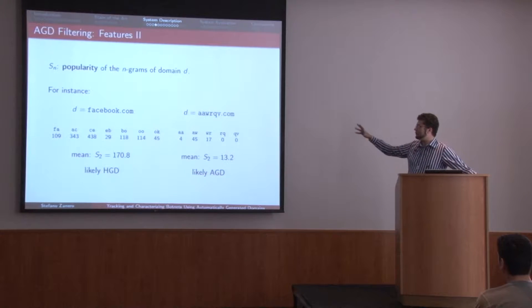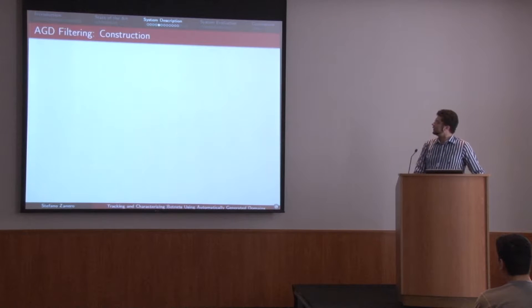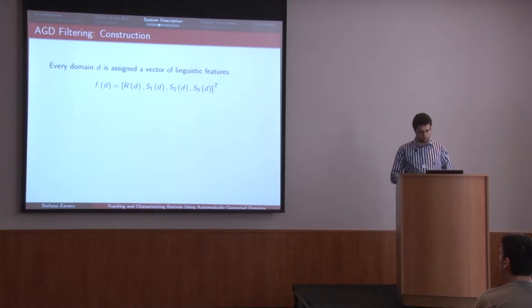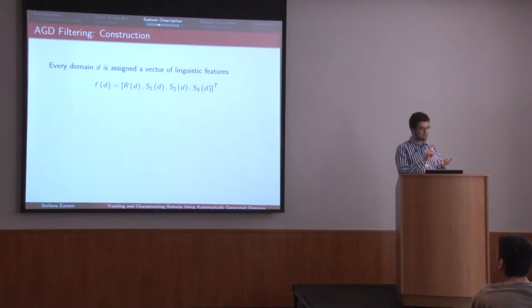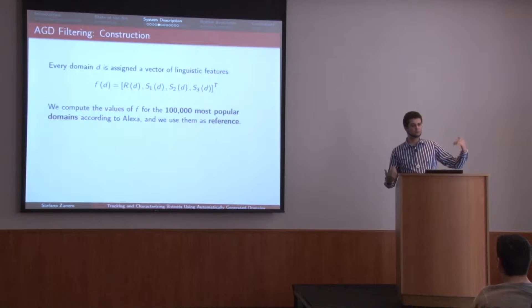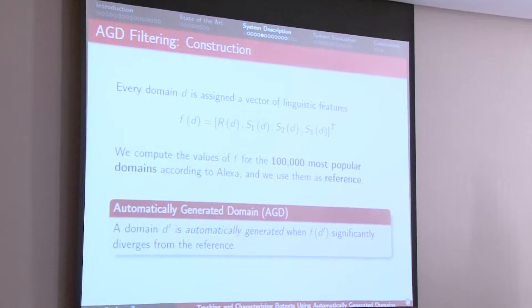This means that humanly generated and automatically generated domains will have drastically different likelihood scores. So what we do is basically use the ratio of words found in dictionaries — the one-gram, two-gram, and three-gram likelihood as features for describing each domain name. We can represent each domain name with these four features. We picked up the 100,000 top domains from Alexa, which we thought was a very good example of humanly generated domains. Everything that is far from this reference is possibly automatically generated.